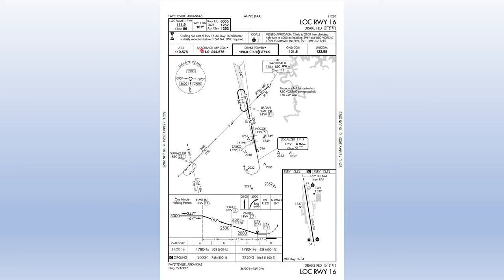Below the missed approach procedure the chart lists all radio frequencies we'll use for the approach. On the plan view we have the minimum sector altitude and the minimum safe altitude pegged off the Razorback VOR — not the runway. The field is approximately 10 to 12 miles south of the Razorback VOR. The MSA is divided into four sectors, one of which is quite high, though this isn't really applicable to us today since we're using the 3,000-foot top altitude from the departure.